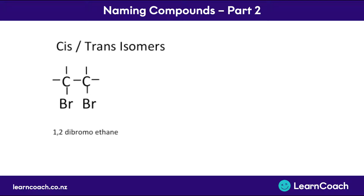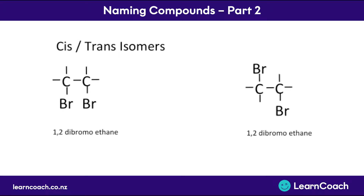Here, if we have a single bond, we've got ethane. It's got two carbons and we've also got a bromine attached to each one of them. So we've got 1,2-dibromo because there are two bromines — ethane. That's the name. But we could also draw that with the bromines on opposite sides to each other. That would also be 1,2-dibromoethane.